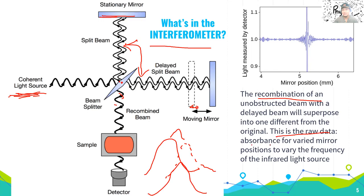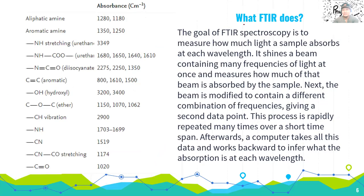The raw data collected is absorbance for varied mirror positions, in order to vary the frequency of the infrared light source. So what the interferometer does is change the frequency so that different values are produced. The goal of FTIR spectroscopy is to measure how much light a sample absorbs per wavelength.